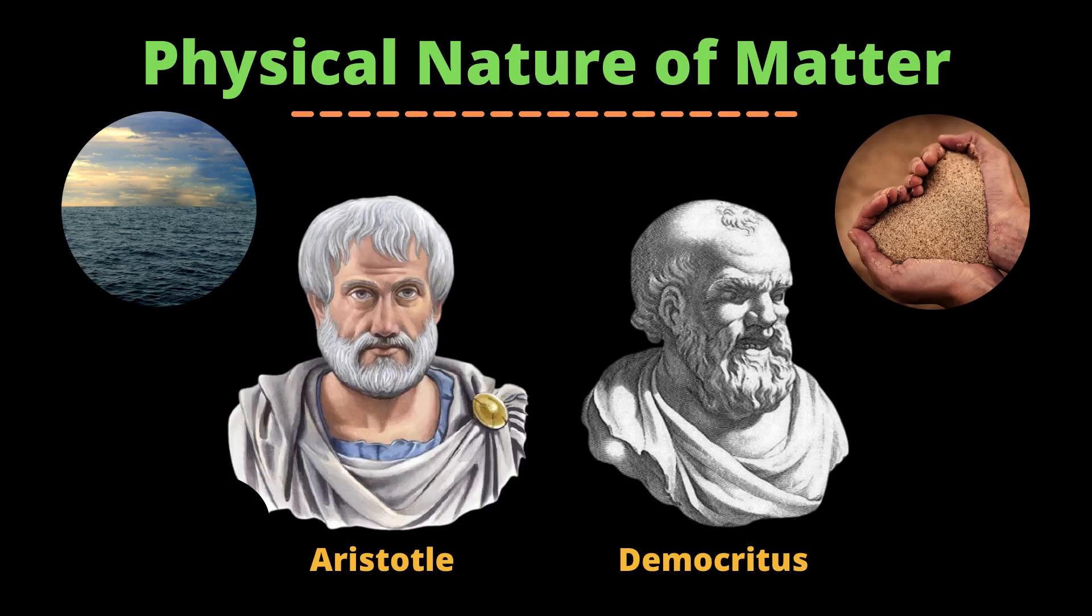About the physical nature of matter, two schools of thought were there. Philosophers like Aristotle believed that like water, matter is continuous and can be infinitely divisible. Philosophers like Democritus believed that like sand, matter is particulate in nature, and it is made up of uncuttable tiny particles.